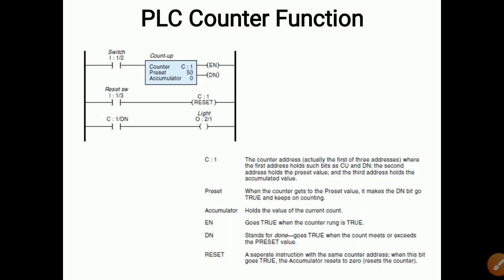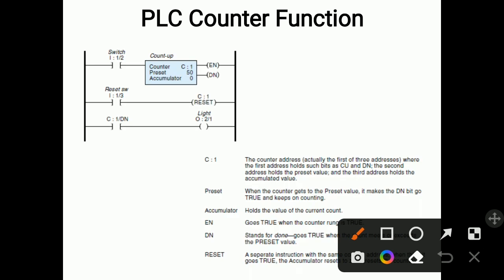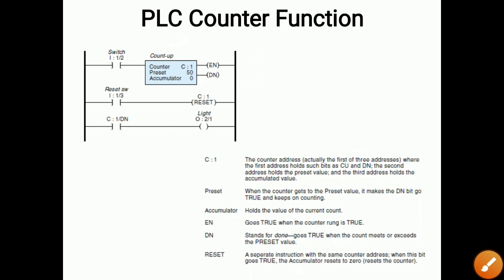Now let's study how the PLC counter function works. It consists of one input switch, a counter box, and two outputs: EN and DN. The counter address C4:1 — similar to the timer — holds addresses such as the CU and DN bits, as well as the preset value and accumulated value.